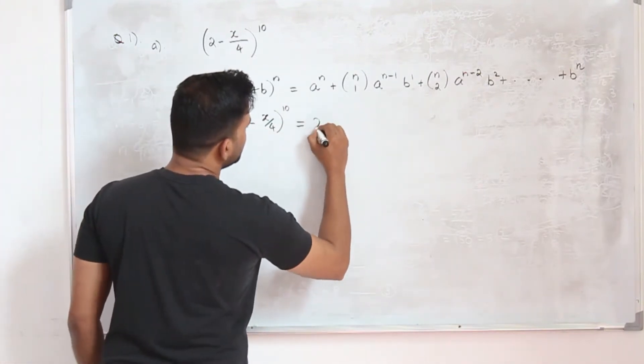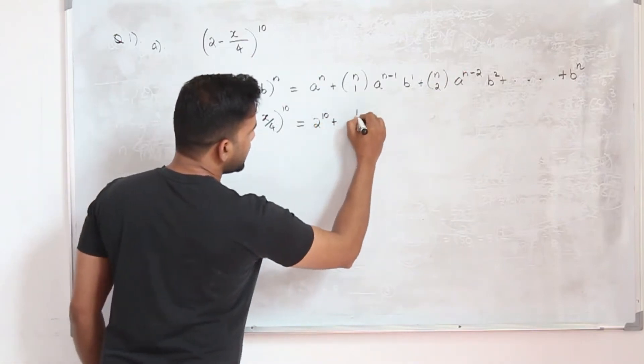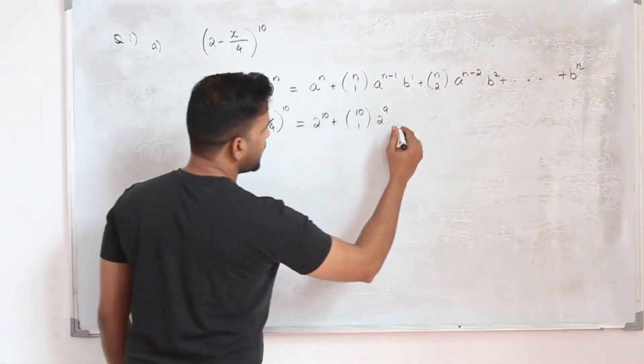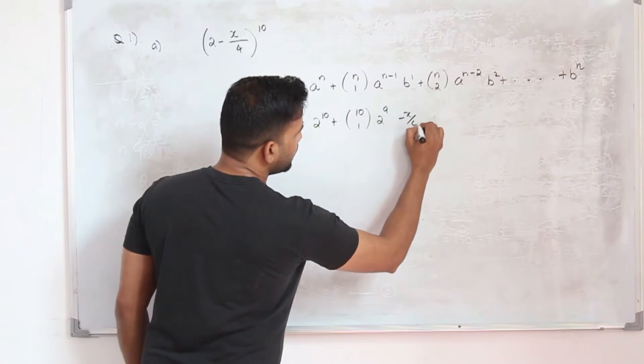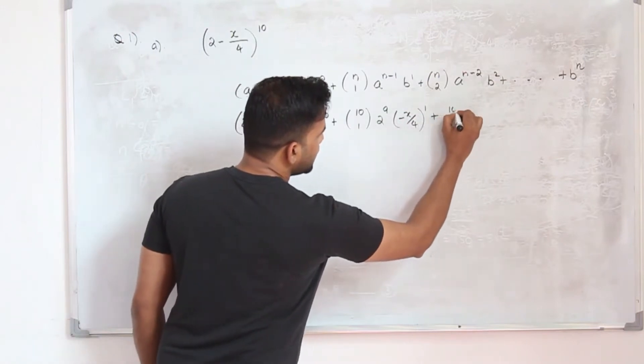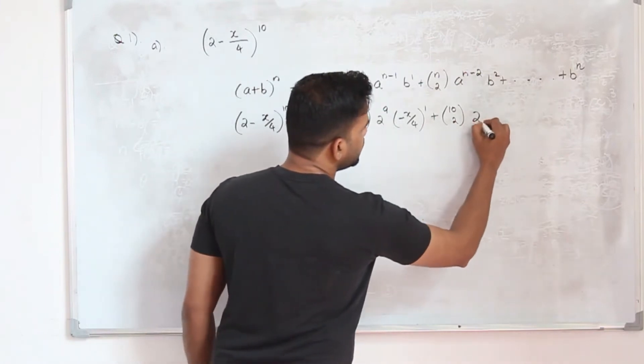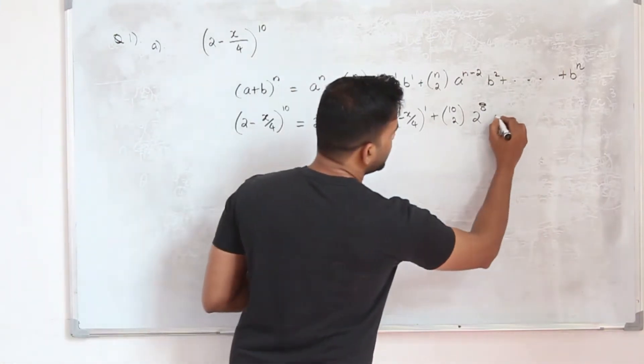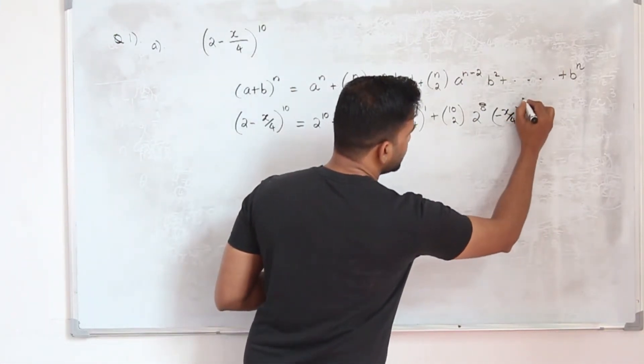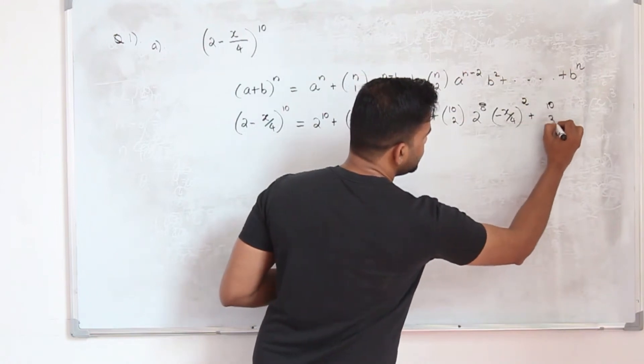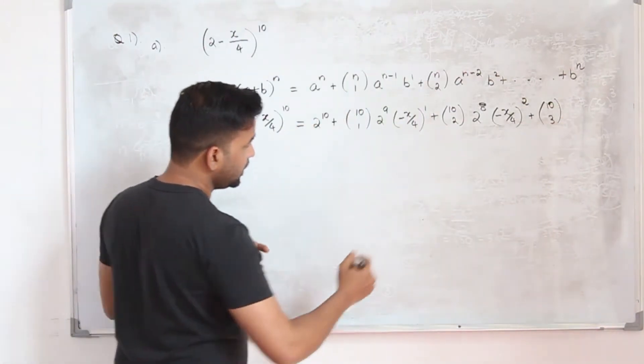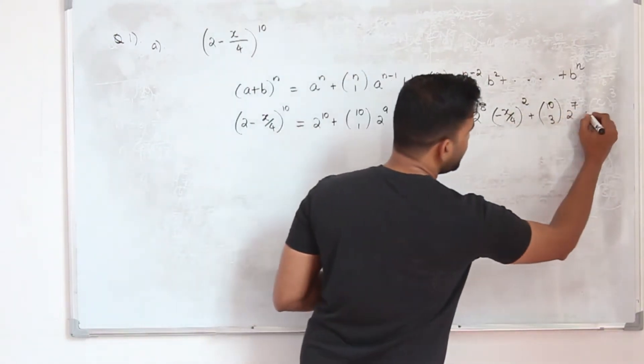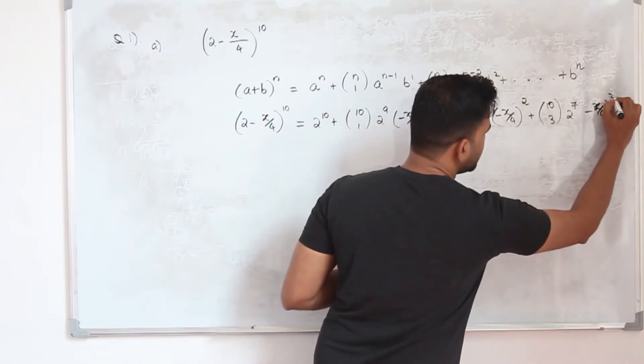So it will be 2^n plus nC1 2^(n-1) which is 10-1=9 and b^1 plus nC2 2^(n-2) which is 10-2=8 and b^2 plus nC3 2^(n-3) which is 10-3=7 and b^3. That's it. We got 4 terms: 1, 2, 3, 4.